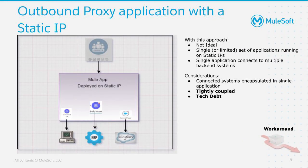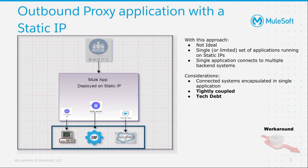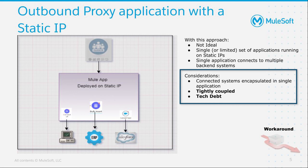Another workaround is to use an outbound proxy application with a static IP. You can create a proxy application to which you assign a static IP. The flows in this proxy application will channel outbound requests to third-party providers. As the application network grows, management becomes a challenge, and a single flow can break the entire application, causing downtime on critical business flows. What you need to consider with this approach is that connected systems are encapsulated in a single application and are tightly coupled, which will definitely increase technical debt.